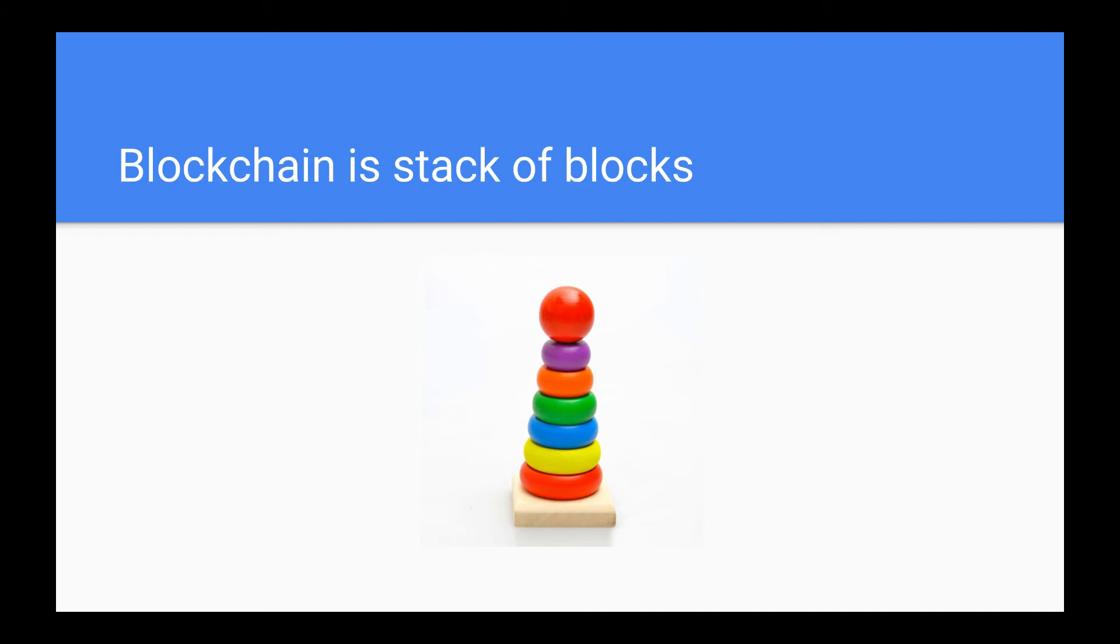So when you try to change the purple block, you need to remove the red block. But imagine if you need to change the yellow block, basically you need to remove the top red sphere block, the purple block, the orange block, the green block, the blue block and then only you can change the yellow block.